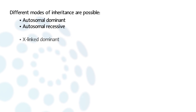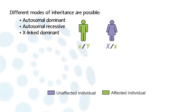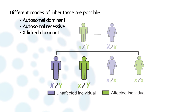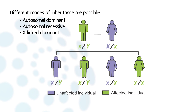Another mode is X-linked dominant inheritance. Both sexes can be affected by the disease, but in general, heterozygous girls are less severely ill than hemizygous boys — there are more women affected more lightly than men. Transmission is vertical; if the disease is compatible with fertility, there are patients in all generations. It differs from autosomal dominant inheritance because there is never father-to-son transmission.